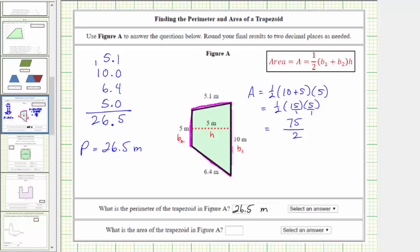We could express the area as 75 halves square meters. But because the figure involves decimals, let's convert 75 halves to a decimal. To do this, we divide 75 by two.